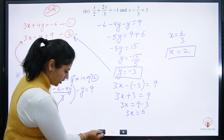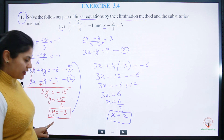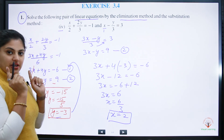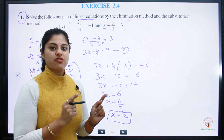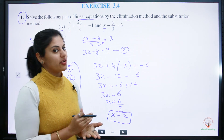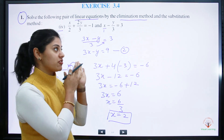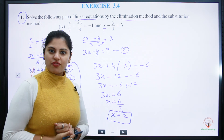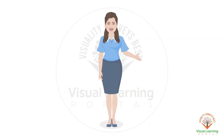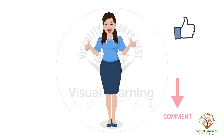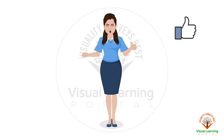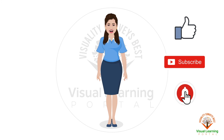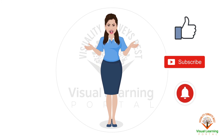So x equals 2 and y equals minus 3. The answer is the same whether you solve using the substitution method or the elimination method. Linear equations can be solved both ways. Thanks for watching Visual Learning Portal. Any questions? Comment below and we will respond as soon as possible. Don't forget to subscribe and press the bell icon for notifications.